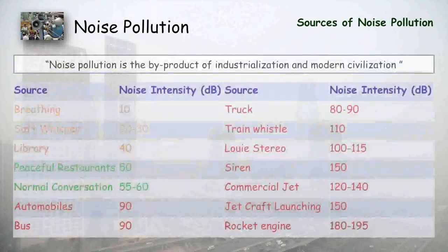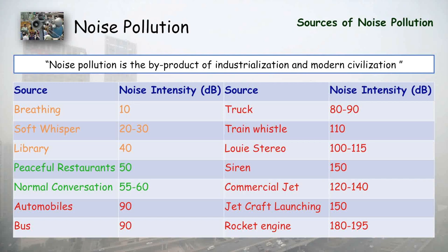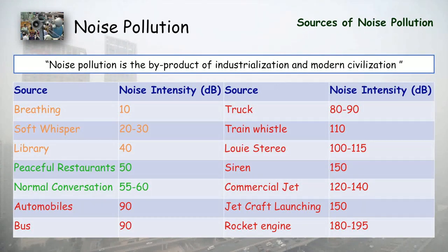The normal hearing range is approximately up to 75 decibels of intensity. In this table, sounds below 75 dB are considered normal, while sounds above 75 dB can be considered noise pollution. Normal breathing produces about 10 dB; soft whispering 20–30 dB; a library around 40 dB; a peaceful restaurant up to 50 dB; and normal conversation up to 55–60 dB — all of these are within the acceptable range.